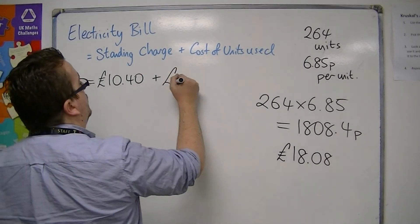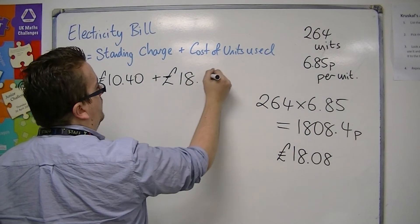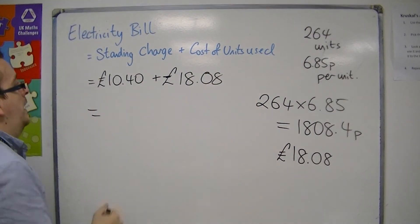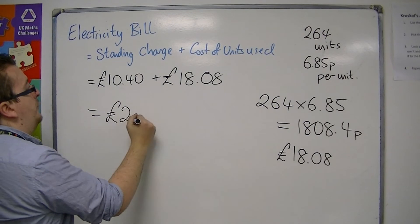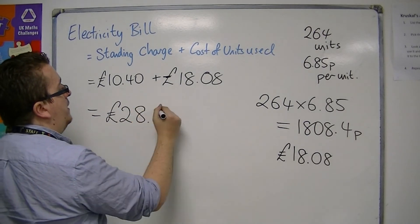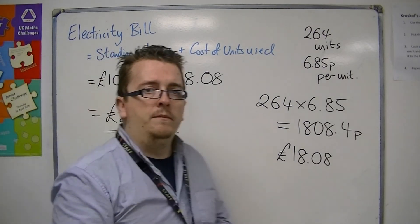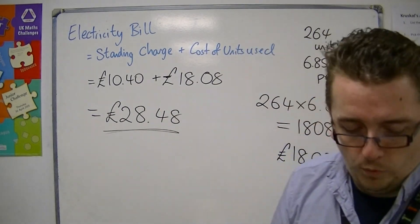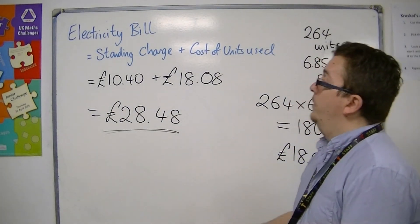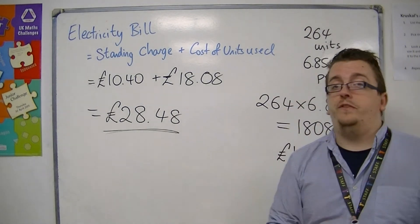This is then added on to the standing charge. And so overall the quarterly bill in this case is £28.48. That is how the bill would be made up — of the standing charge and the cost of units.